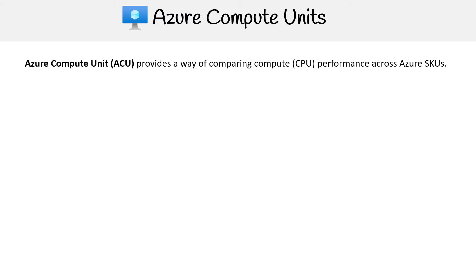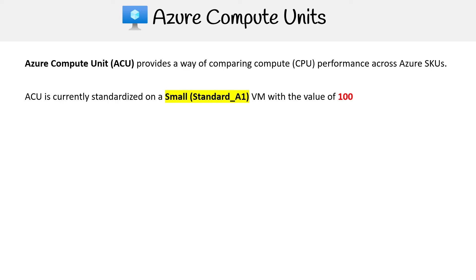Let's quickly talk about Azure Compute Units. Azure Compute Units, also known as ACUs, provide a way of comparing compute — specifically CPU performance — across Azure SKUs. SKUs is the same thing as sizes or series, so you'll just see us varying the terms on that.